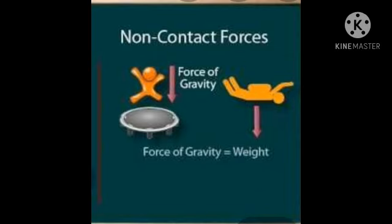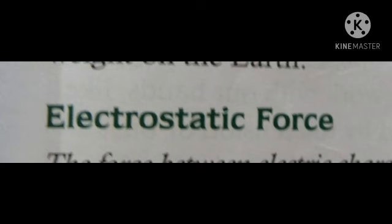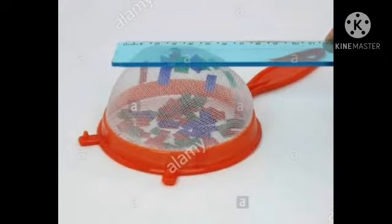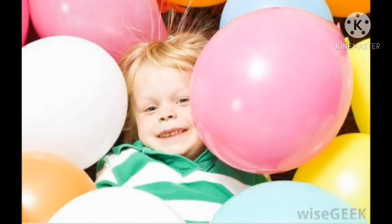The next non-contact force is electrostatic force. The force between electric charges is called electrostatic force. If we rub a plastic object — like a pen, comb, or CD — with our hair and bring it close to tiny bits of paper, the bits of paper get attracted toward the plastic object due to electrostatic force. Tiny particles of dust and smoke can also be attracted by electrostatic force.